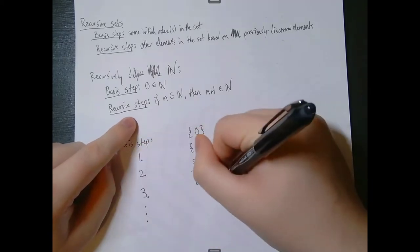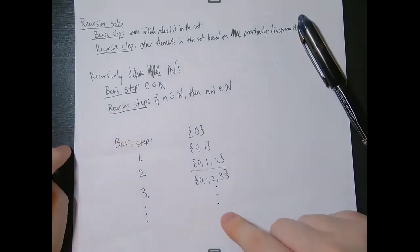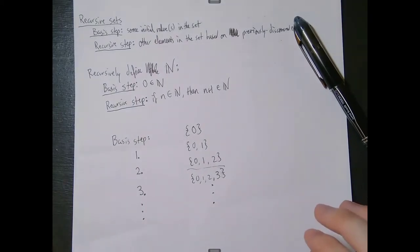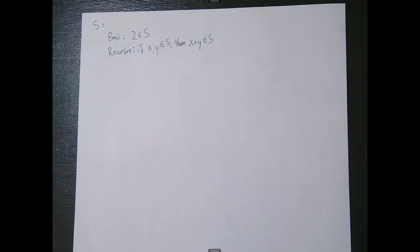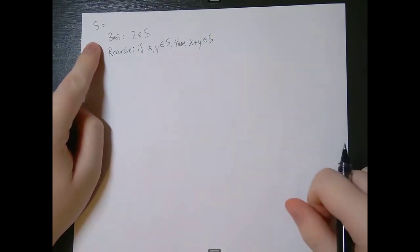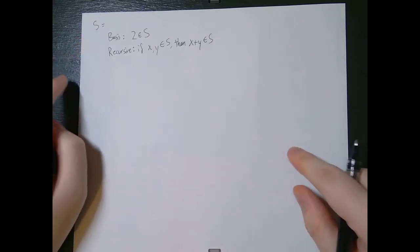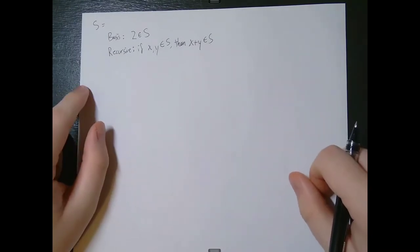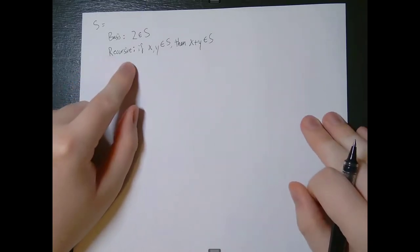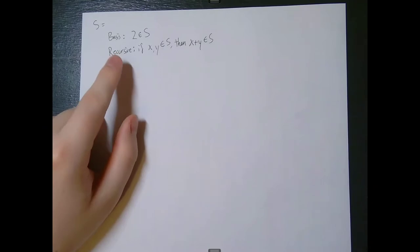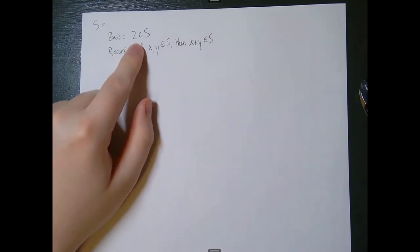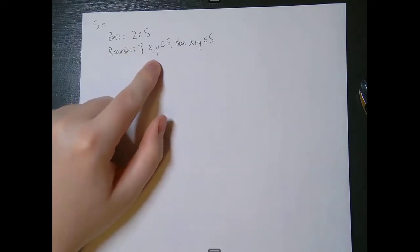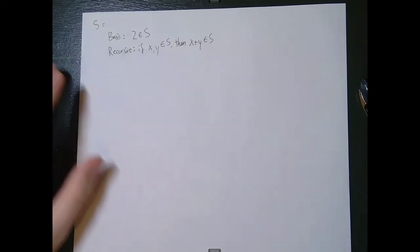Let's look at another example. I'm going to define a set S, and then we'll see what elements are in S and find a nice name for it. The basis step: two is in S. And for the recursive step: if we take any x in S and any y in S, then x plus y is also in S.